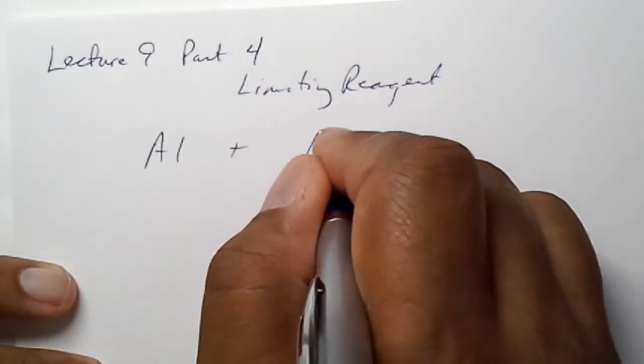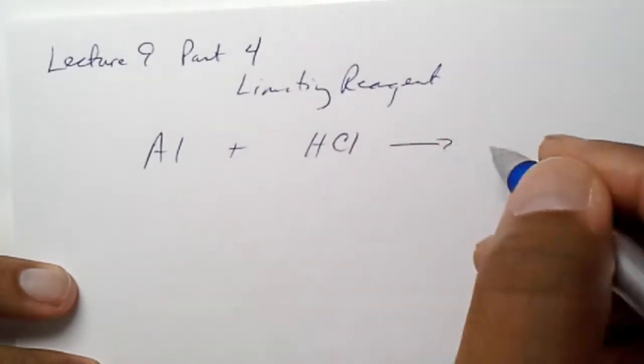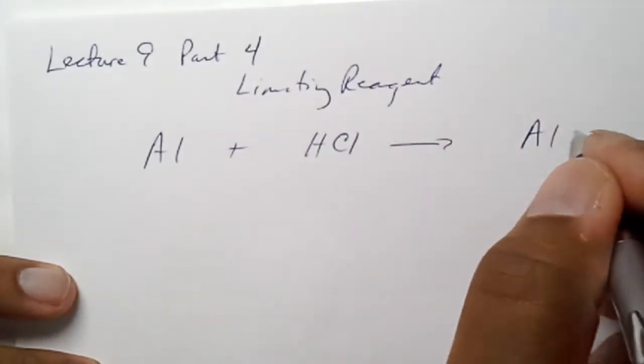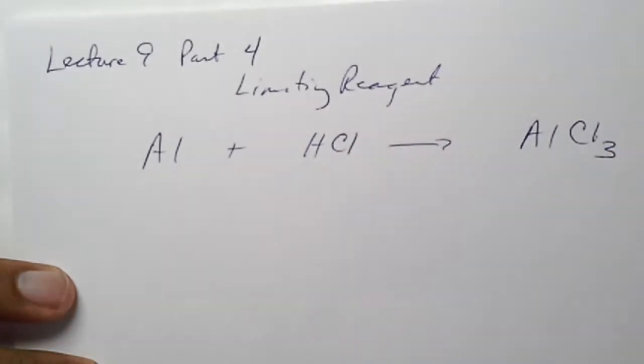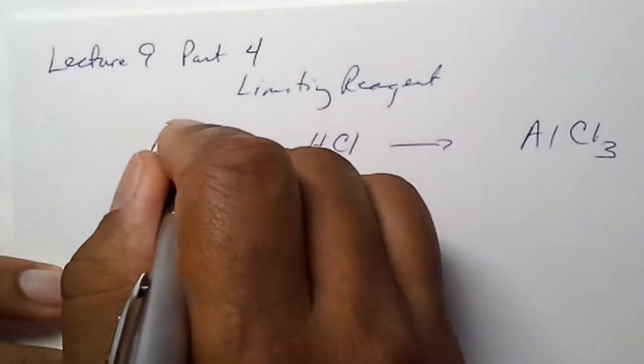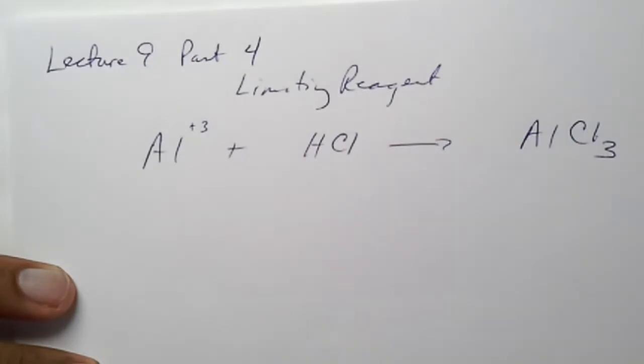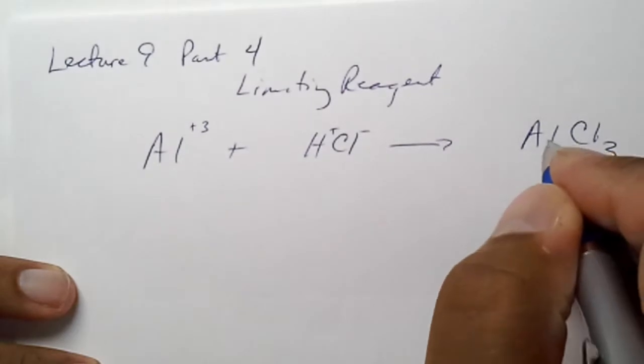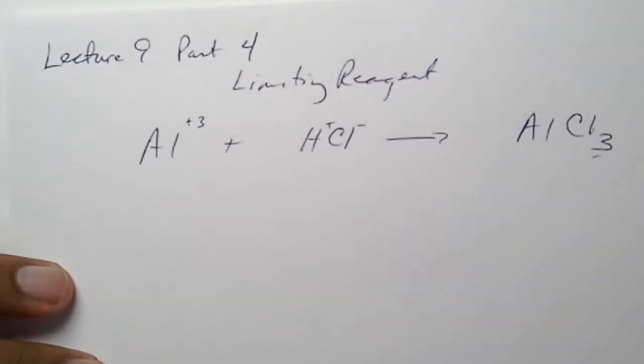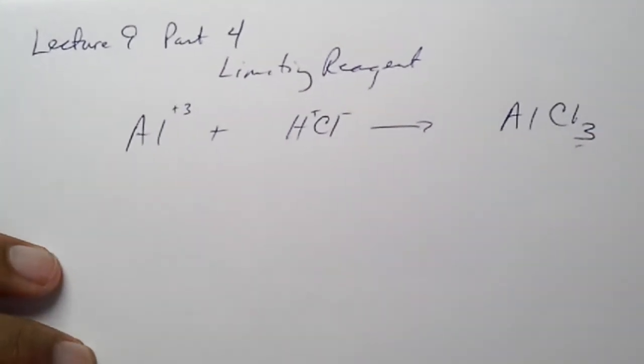Aluminum plus hydrochloric acid yields aluminum chloride. All right. And aluminum has an oxidation state of plus three. Chloride is minus one. So we need three chlorides for every aluminum molecule.